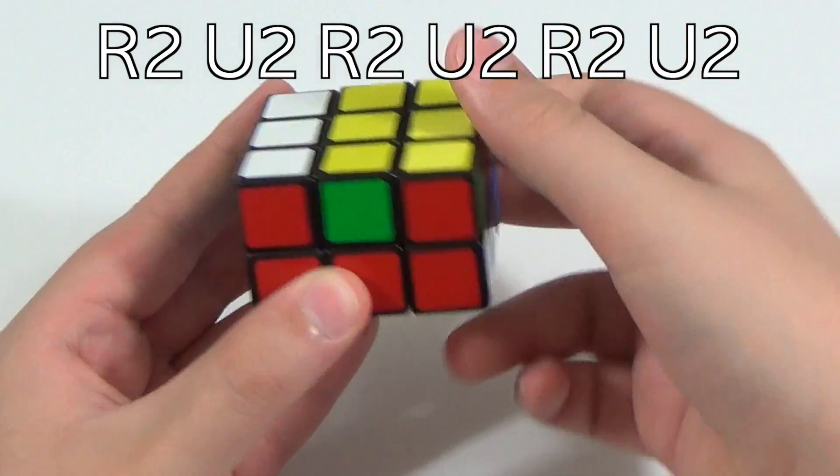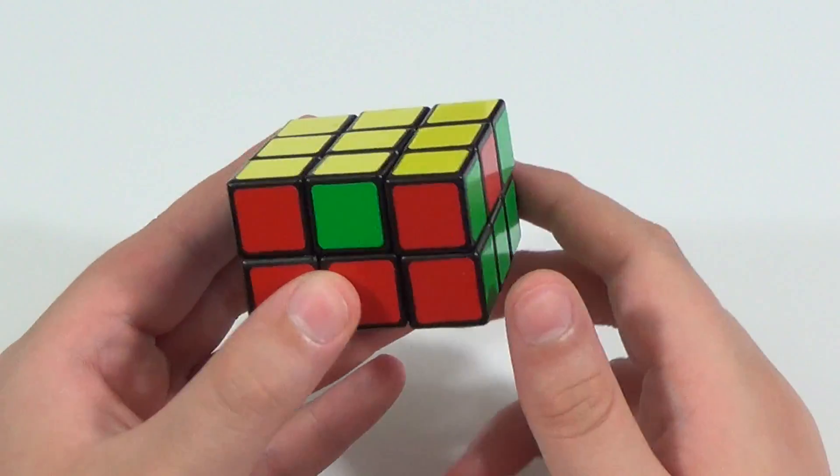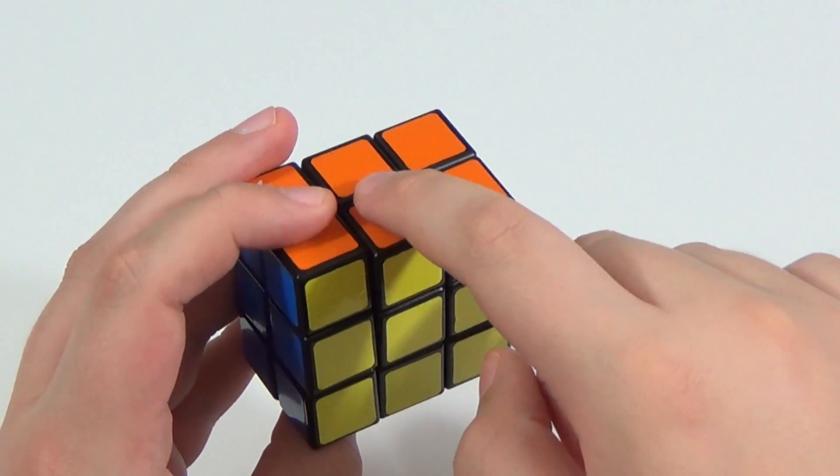r2, u2, r2, u2, r2, u2. So just r2, u2 times 3. And we have put that orange piece in place.